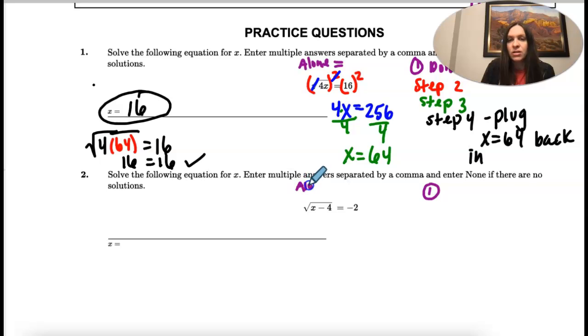There's a radical, and then there's an equal sign, and then a number. So step one is already done. We don't have to do anything.